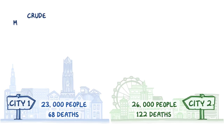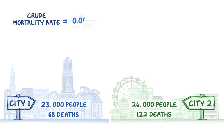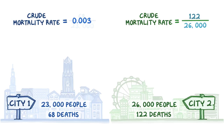The crude mortality rate in City 1 is 68 deaths divided by 23,000 people, or .003. This means that there were 3 deaths for every 1,000 people that year in City 1. The crude mortality rate for City 2 is 122 divided by 26,000, which equals .005, or 5 deaths per 1,000 people.